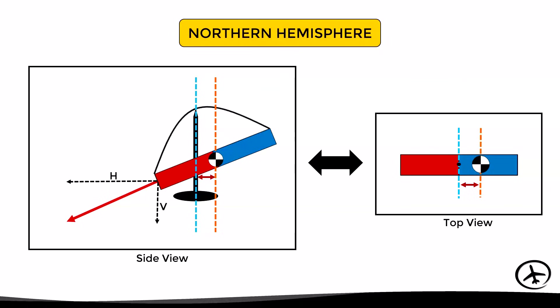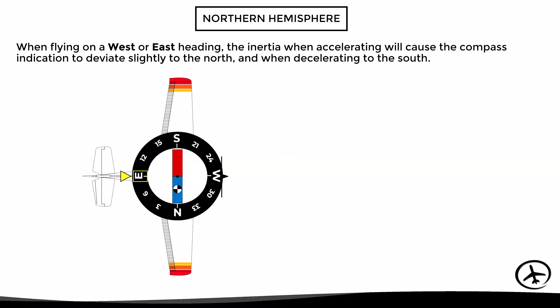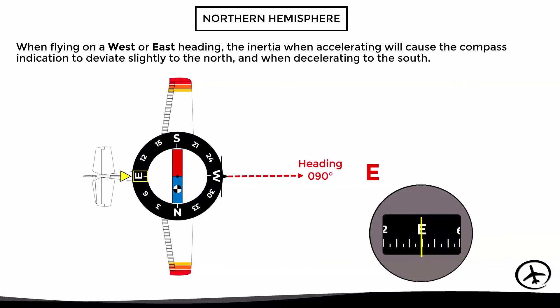With this in mind, let's see what effect this has on the compass indication in the northern hemisphere. When flying on a west or east heading, the inertia caused during acceleration will cause the compass indication to deviate slightly to the north, and the opposite happens during deceleration — the inertia will cause the compass indication to deviate slightly to the south. Here we have an aircraft flying east with heading 090. Inside the compass, the magnet has its center of gravity shifted towards the blue side due to magnetic dip.